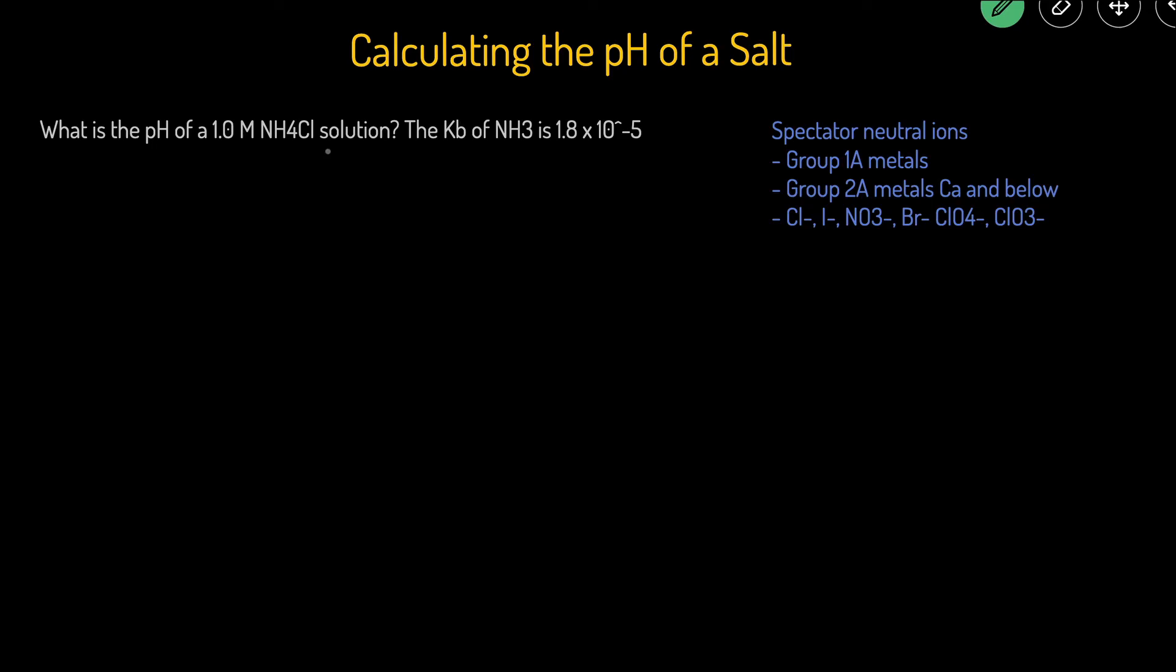So the first thing we should do, just like in the last problem, is just get rid of any of the neutral spectator ions, which Cl minus is one of them. You can see it right here. So we get rid of Cl minus. We're left with NH4 plus.